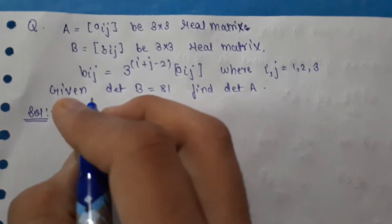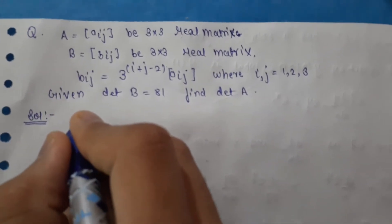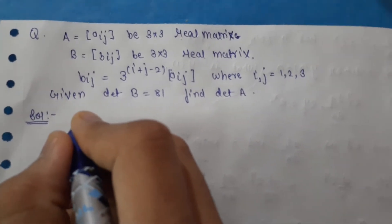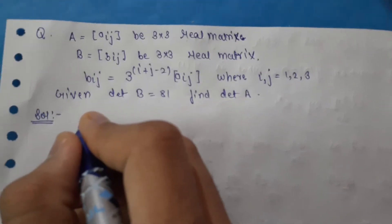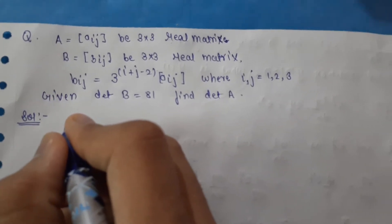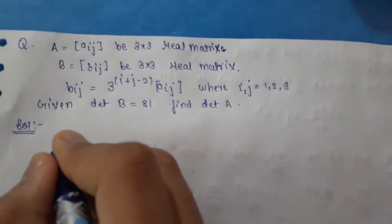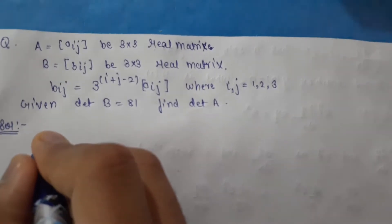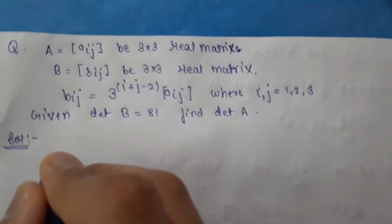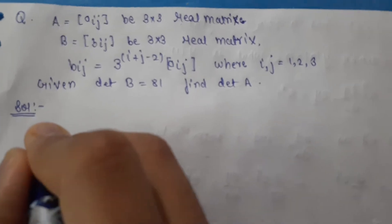Given A = [a_ij] is a 3×3 real matrix, and B = [b_ij] is a 3×3 real matrix where b_ij = 3^(i+j−2) · a_ij, for i, j = 1 to 3. Given that det(B) = 81, we have to find det(A).